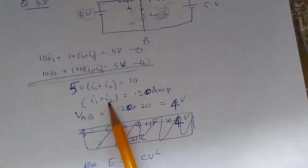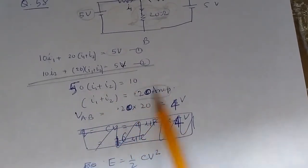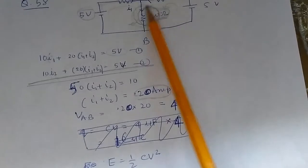That means I1 plus I2 equals 10 divided by 50, or 0.2 amperes. That's the current flowing through this resistor.